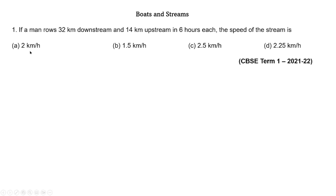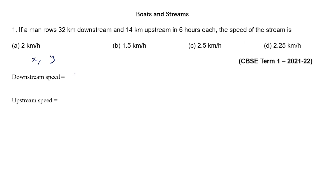The first question was given in last year's term 1 board exam paper. If a man rowed 32 km downstream and 14 km upstream in 6 hours each, the speed of the stream is. Here, we can see that a man rowed 32 km downstream in 6 hours and 14 km upstream in 6 hours. If we consider the speed of the man in still water as x and speed of the stream as y, then downstream speed is distance divided by time, which is 32 by 6. This downstream speed equals x plus y, so x plus y equals 32 by 6.